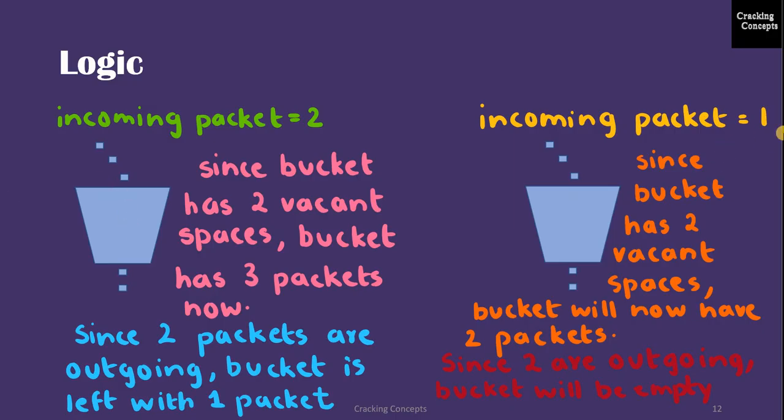Now the last input is size 1. We have 1 packet here and 2 vacant spaces. Since there is only 1 input, we can easily accommodate that. So the current status of bucket will be 2 packets. Since the outgoing rate is 2, these 2 packets will also be taken out. Then finally the status of bucket will be empty.